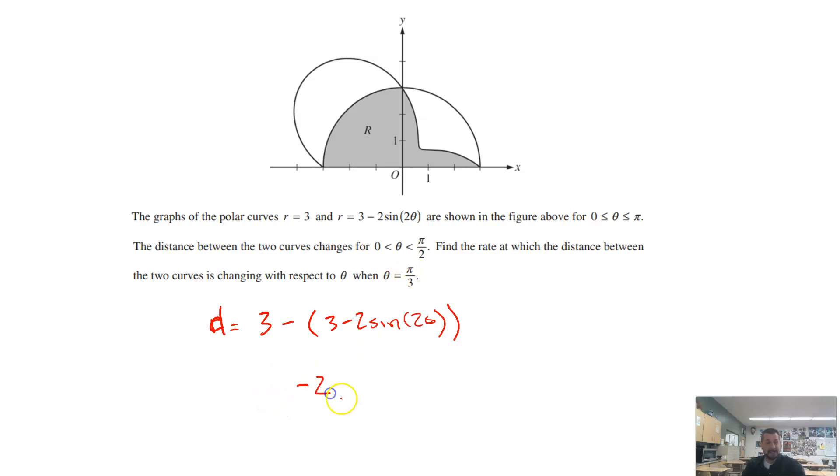And when I do that, in this case, I just get negative 2 as my answer for the distance. That is the rate at which the distance between the two is changing. So that would be like, we'd call it d for the distance divided by d theta. Either way, that's what we're looking for in that problem. And that is our answer to letter C.